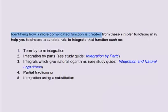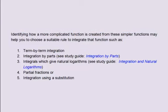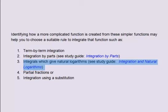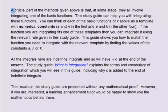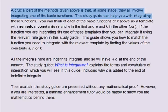Identifying how a more complicated function is created from these simpler functions may help you to choose a more suitable rule to integrate that function, such as: 1. Term-by-term integration. 2. Integration by parts — see study guide 'integration by parts'. 3. Integrals which give natural logarithms — see study guide 'integration and natural logarithms'. 4. Partial fractions. 5. Integration using a substitution. A crucial part of all these methods is that at some stage they all involve integrating one of the basic functions. This study guide can help you with integrating these functions.